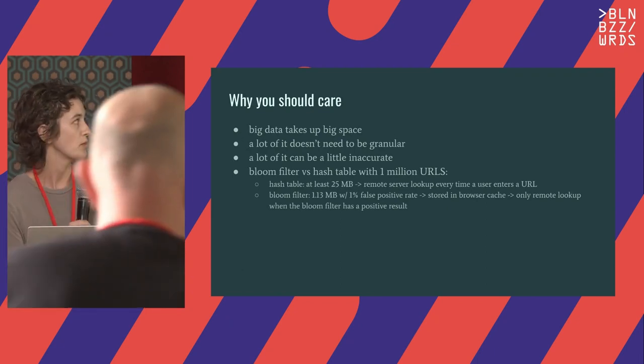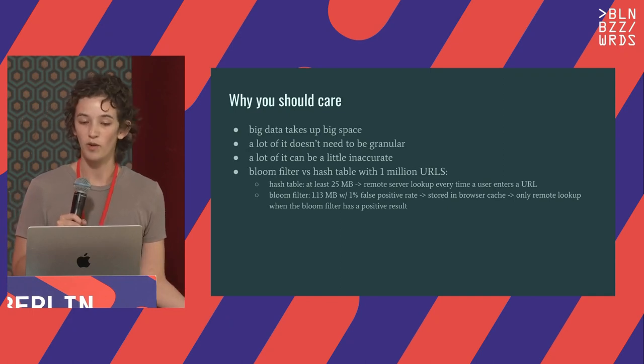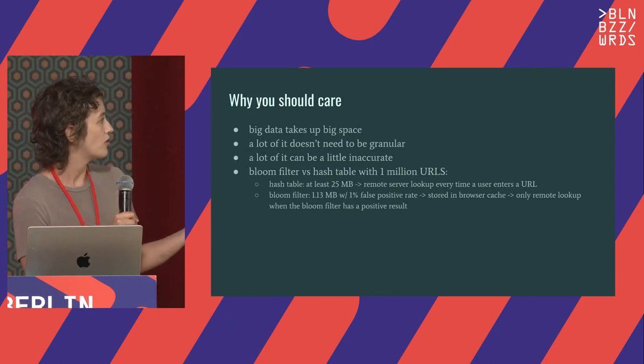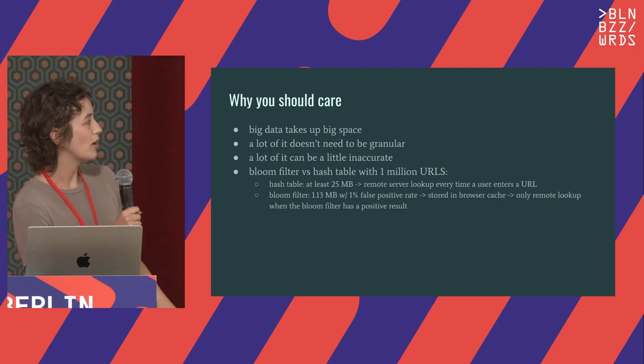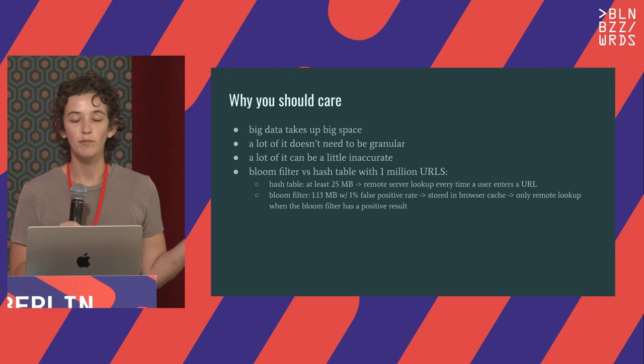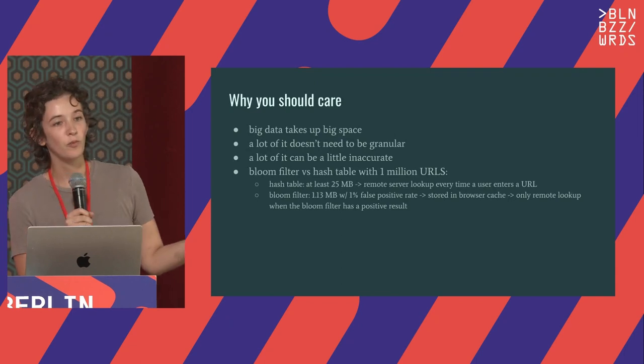For example, a bloom filter versus a hash table with a million URLs: the hash table will have about 25 megabytes and a remote server lookup for every single time a user enters a URL. As opposed to a bloom filter, we get 1.13 megabytes at a 1% false positive rate, which means that can be stored in a browser cache, so there's only a remote lookup when that bloom filter actually has a positive result. Google Chrome used to store one of these in your browser cache so that if you enter a URL, it has a very quick turnaround time for whether or not it's malicious.